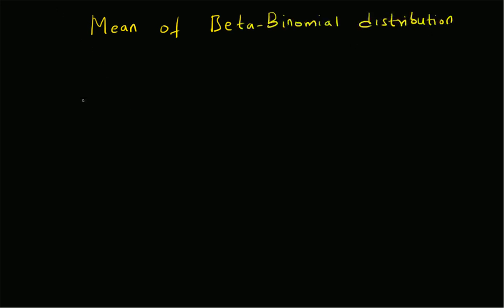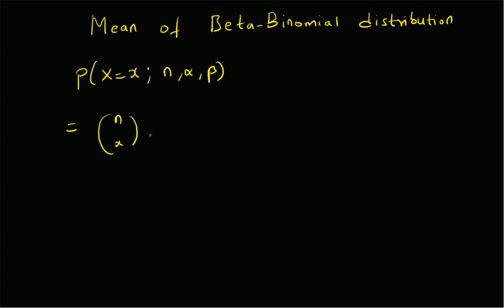Hello, welcome. In this short video, let us look at the derivation of the mean of the beta binomial distribution. The beta binomial distribution is given by the probability of X equal to x with parameters n, alpha, and beta. It is defined as n choose x, the combination of n and x.